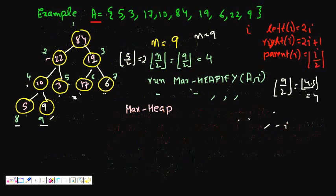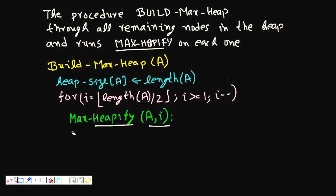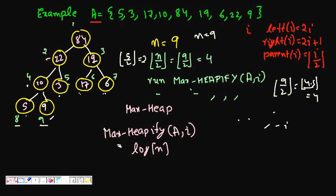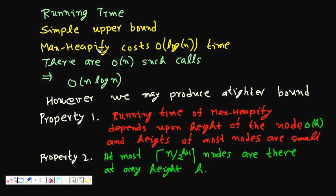Now let's analyze the running time. Max_heapify for any node costs O(log n) in the worst case (when it must percolate the full height). There are at most O(n) calls since there are at most n nodes. This gives a simple upper bound of O(n log n), which is correct but not tight.